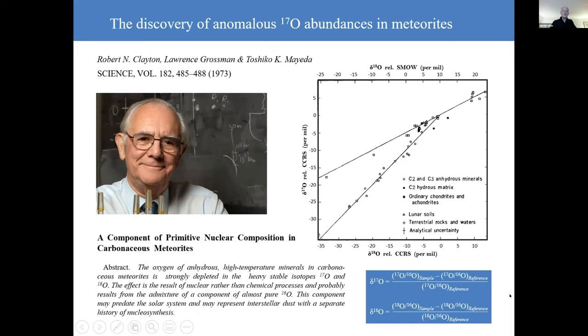So what Professor Robert Clayton and his colleagues at the University of Chicago did, they measured a load of terrestrial samples, terrestrial rocks and waters, lunar soils, and as expected, everything fitted on a line of slope half, which you would expect on a delta 17 O versus delta 18 O plot if this mass dependent relationship holds.